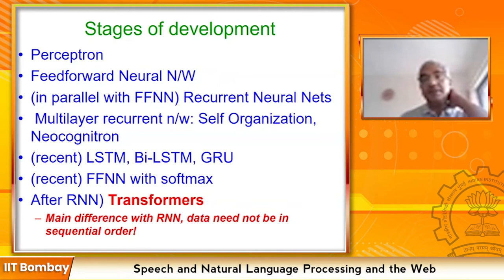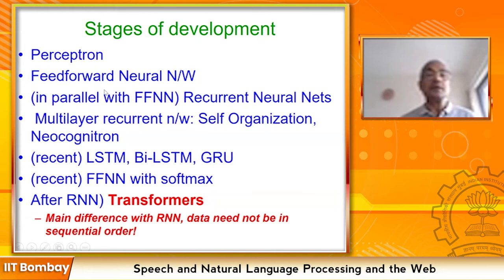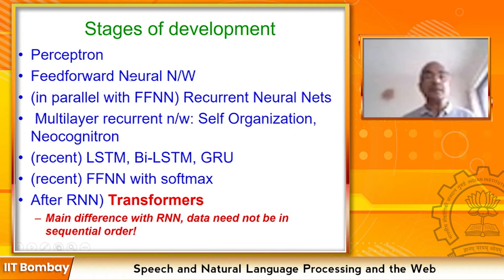The stages of development in reaching deep learning: perceptron came first — a single neuron with connections. This gave way to feed-forward neural networks, where it was understood that single perceptrons are not powerful enough, but an assembly of perceptrons — like neurons in the brain — is very powerful. That assembly uses the back-propagation algorithm and has been found extremely useful across disciplines.